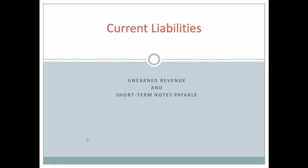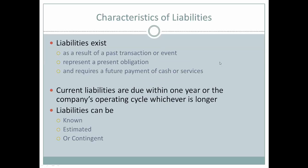Current liabilities. We're going to be looking at two of them: unearned revenue and short-term notes payable. Characteristics of liabilities: they exist as a result of a past transaction or event that gives rise to a present obligation which requires a future payment of cash or services. So the past gives rise to a present obligation requiring future payment.